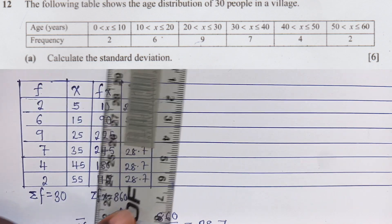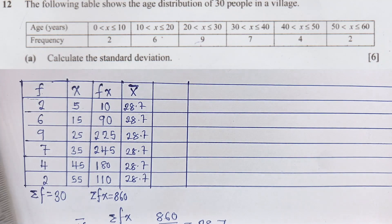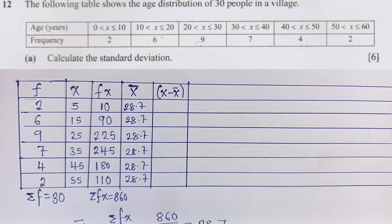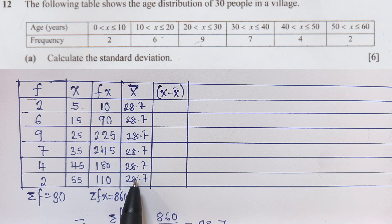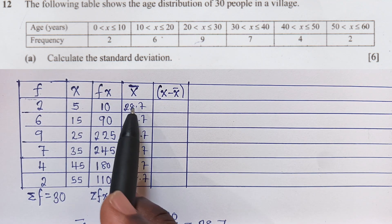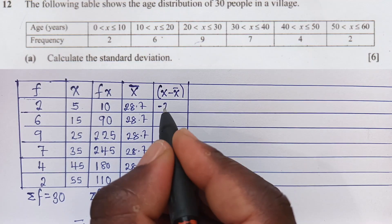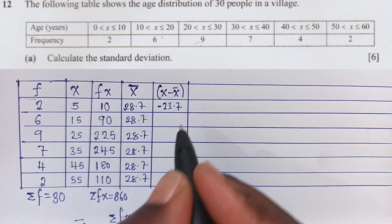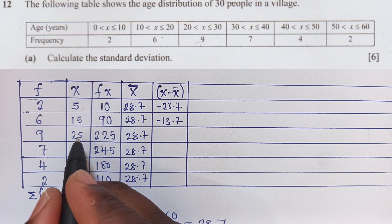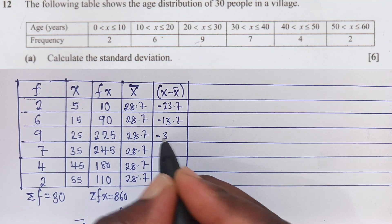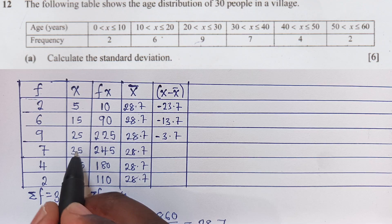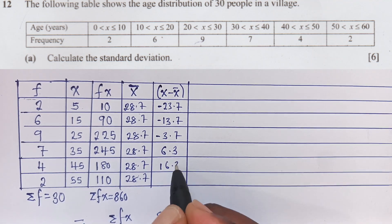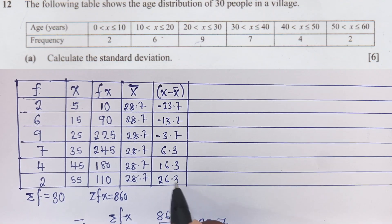The next column is (x − x̄) — subtract the mean from each midpoint. So: 5 − 28.7 = −23.7, 15 − 28.7 = −13.7, 25 − 28.7 = −3.7, 35 − 28.7 = 6.3, 45 − 28.7 = 16.3, and 55 − 28.7 = 26.3.